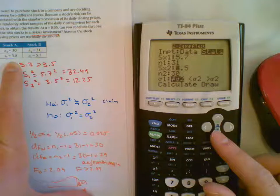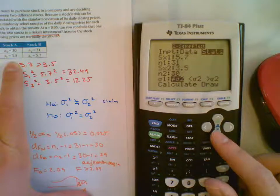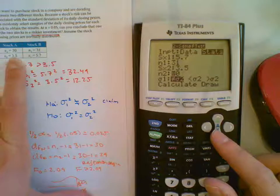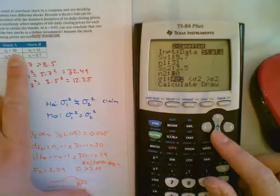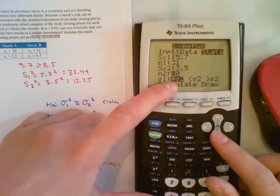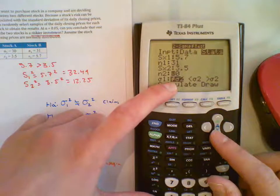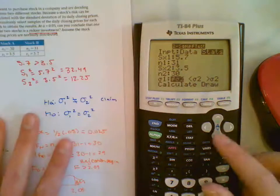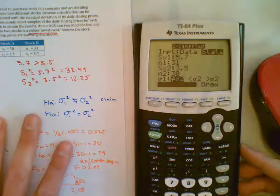My second sample standard deviation was 3.5 and my number of total was 30. And then since this was a two-tailed test, I select my alternative hypothesis of not equal to, and then you're going to click down one more for calculate.